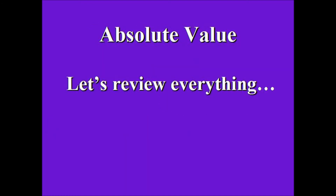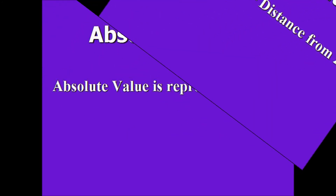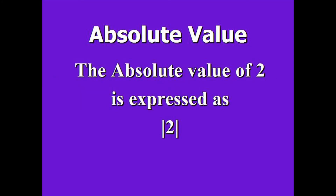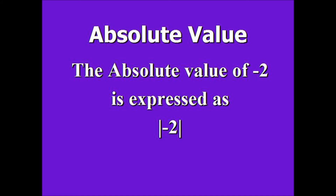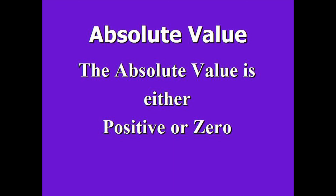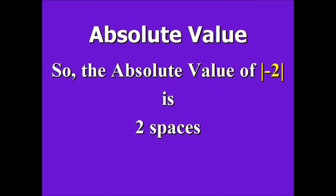Let's review everything. Absolute value is the distance a number is from zero, represented by these brackets. The absolute value of 2 is expressed as 2 enclosed in brackets, and the absolute value of negative 2 is expressed as negative 2 enclosed in brackets. Distance is always measured with positive numbers or zero if you're not moving, so absolute value is always positive or zero. The absolute value of 2 and the absolute value of negative 2 are both two units from zero.